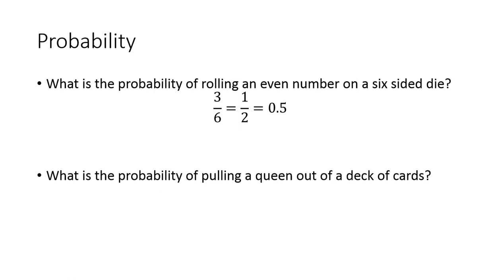When dealing with probabilities, we usually want to keep them as a decimal — zero point something. The next one: what's the probability of pulling a queen out of a deck of cards? There are four queens and 52 total cards. You divide that down and end up with 1 over 13, or about 7.69%. This would be theoretical — experimental is if we actually did it, theoretical is what should happen.